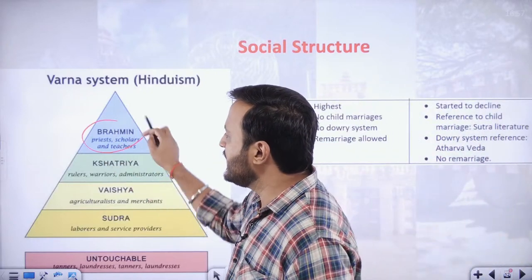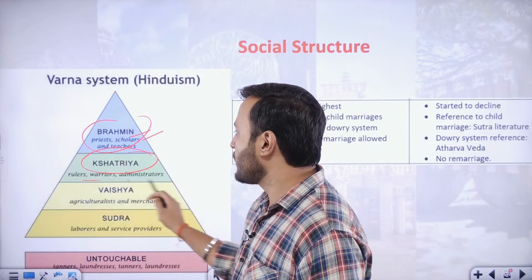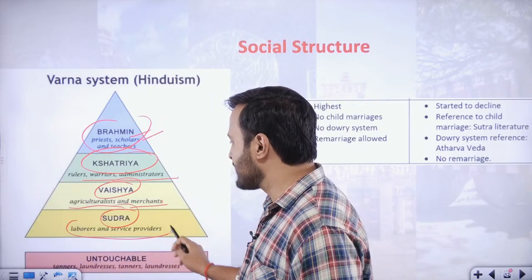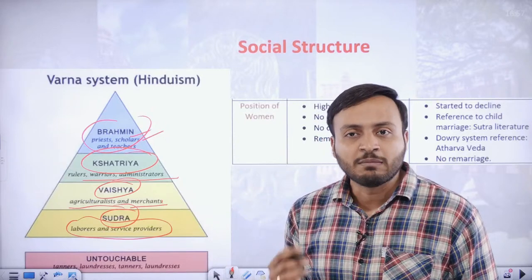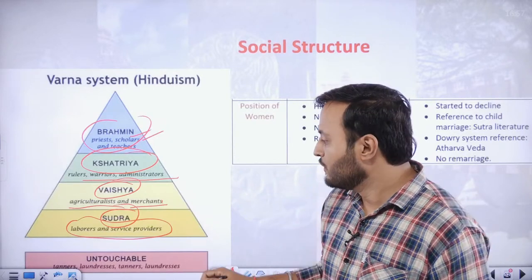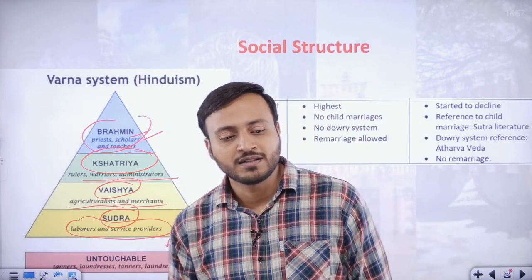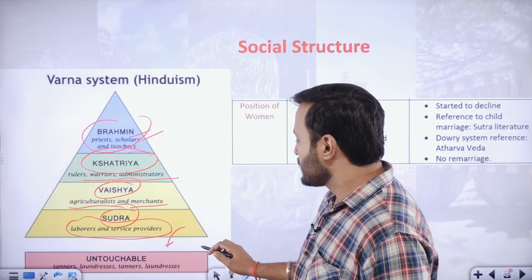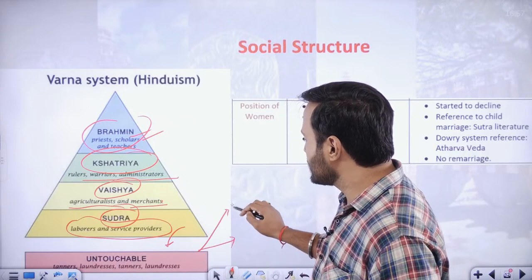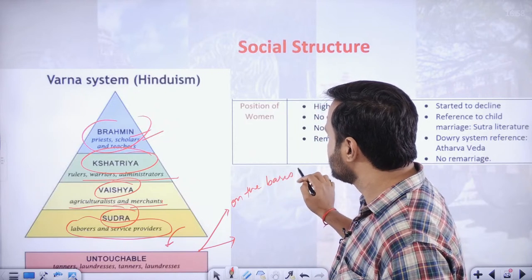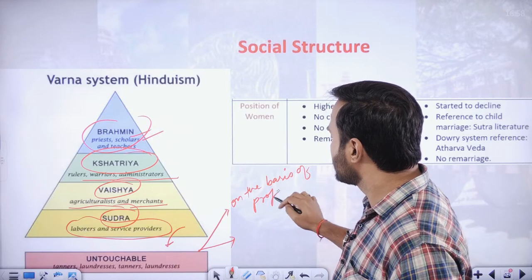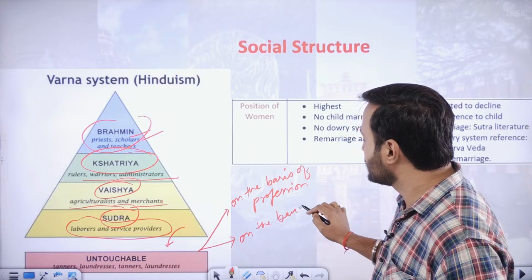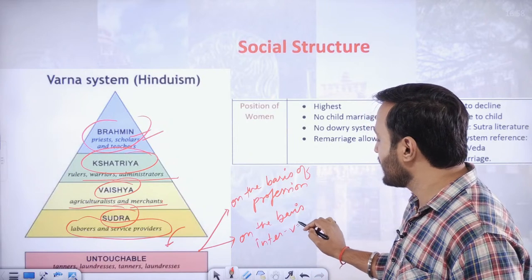The social structure had Brahmans — priests, scholars, and teachers; Kshatriyas — rulers, warriors, administrators; Vaish — agriculturists, merchants, traders; and Shudra — laborers and service providers. However, there was also the emergence of outcast people. People became outcast on two bases: on the basis of profession, and on the basis of intervarna marriages.